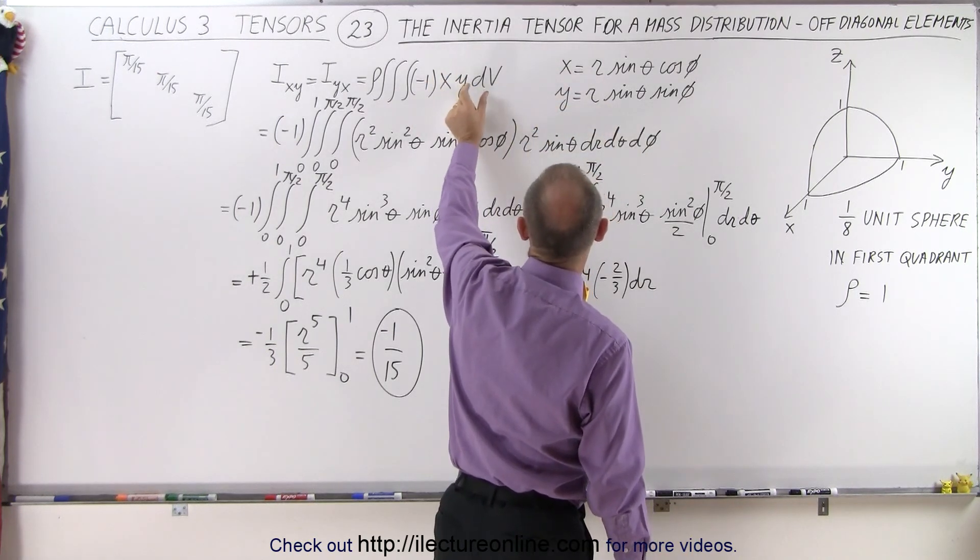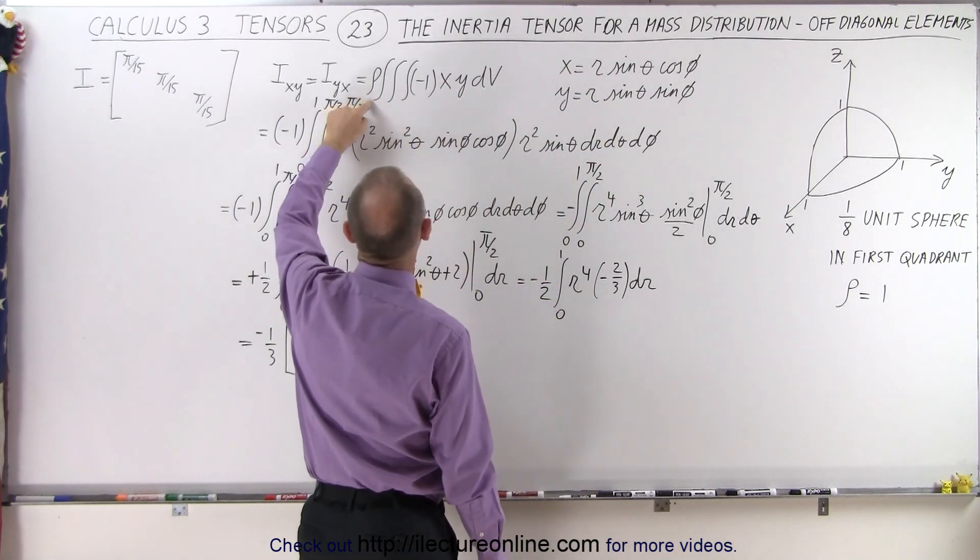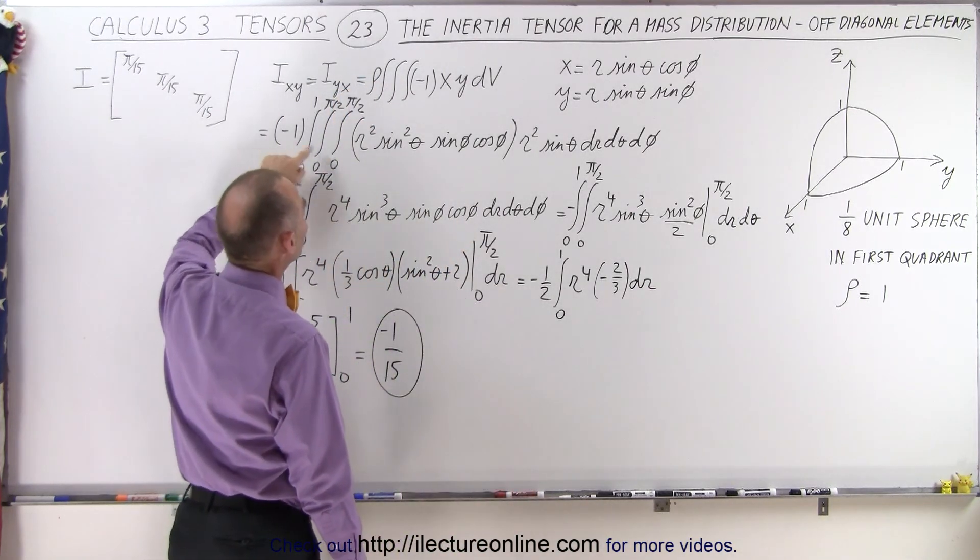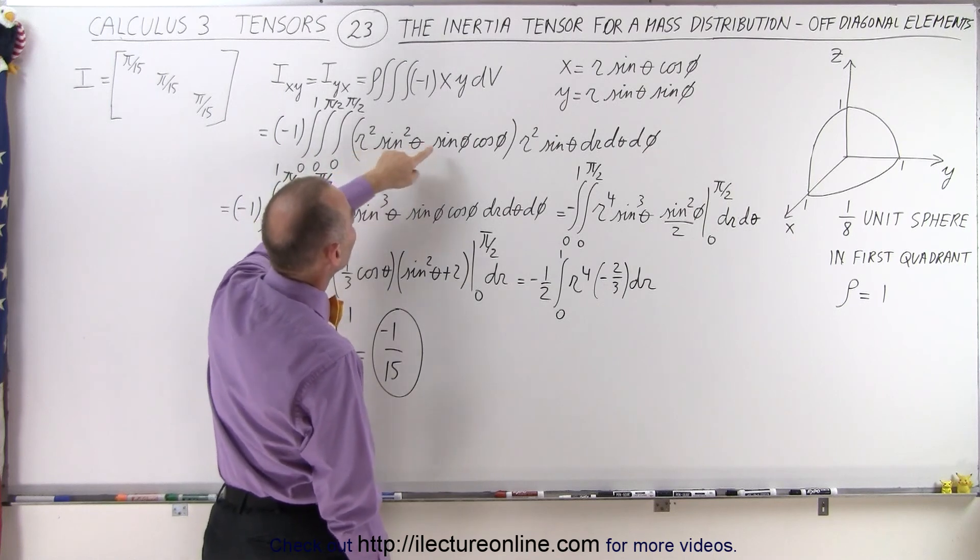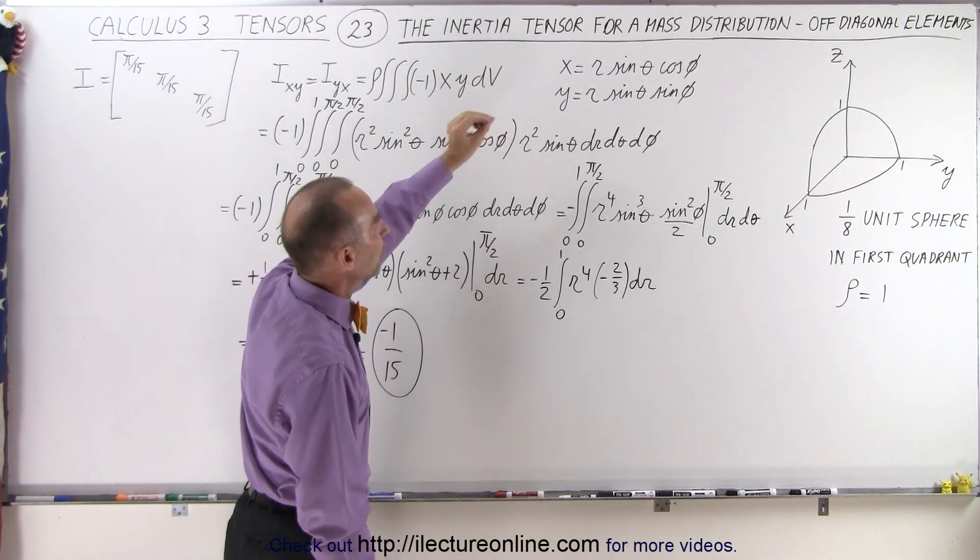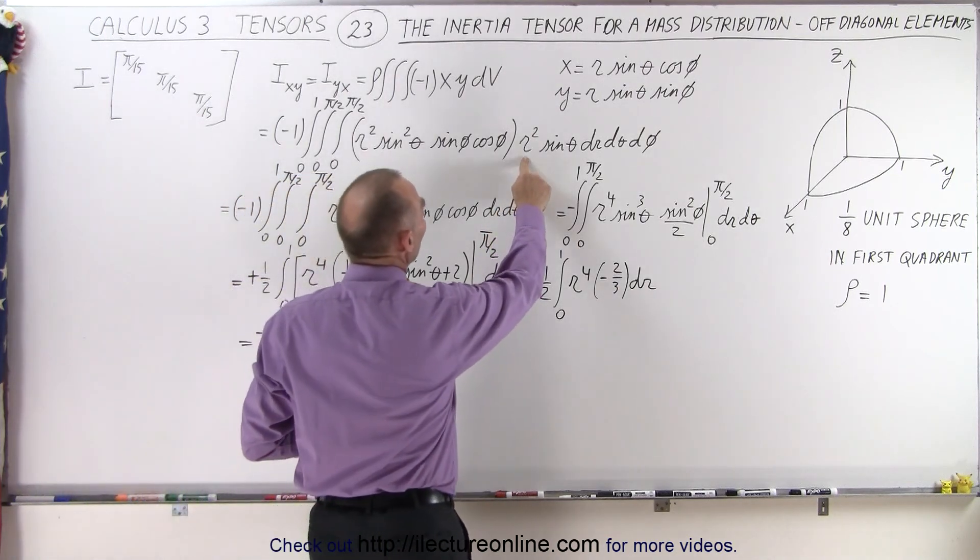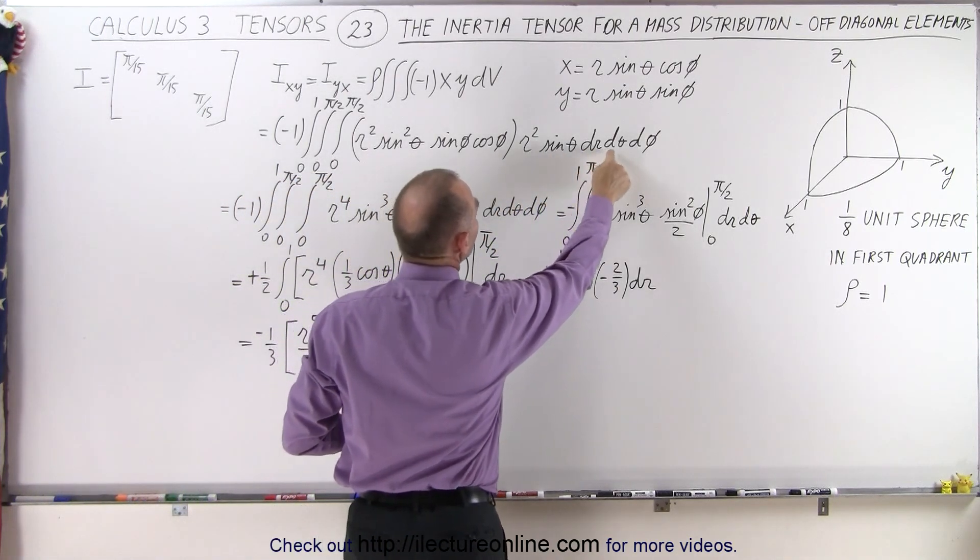That means when we multiply x times y together, we pull the negative 1 out, and the density is equal to 1, we end up with the negative 1 in front, r squared, sine squared of theta, sine of phi, cosine of phi. We multiply x times y together, and the volume element dV is r squared sine of theta dr dtheta dphi.